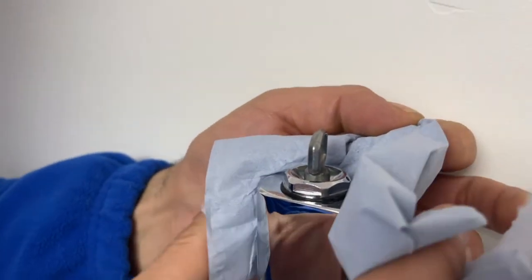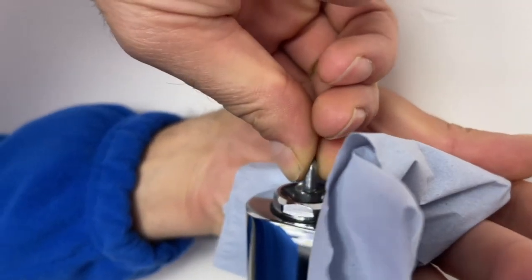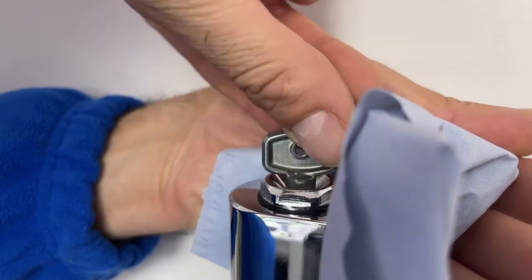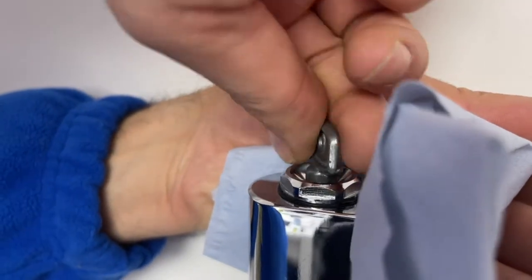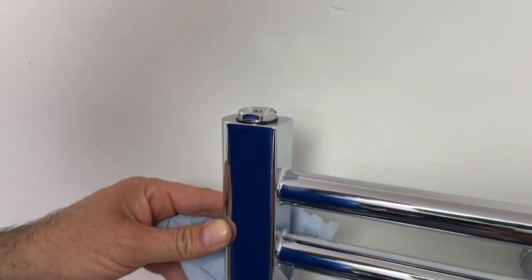Slowly open the bleed key until water comes out, and then close it. Now the radiator is all bled and ready to use.